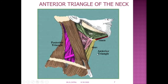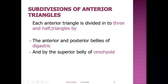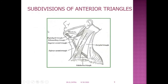Now, the anterior triangle is subdivided into many triangles. Each anterior triangle is divided into three and a half triangles by muscles: the anterior and posterior bellies of digastric, and the superior belly of omohyoid. The inferior belly of omohyoid is present in the posterior triangle. So only these three bellies separate the anterior triangle into three and a half triangles.